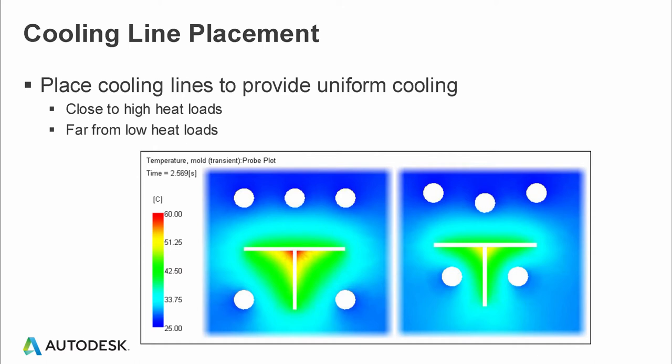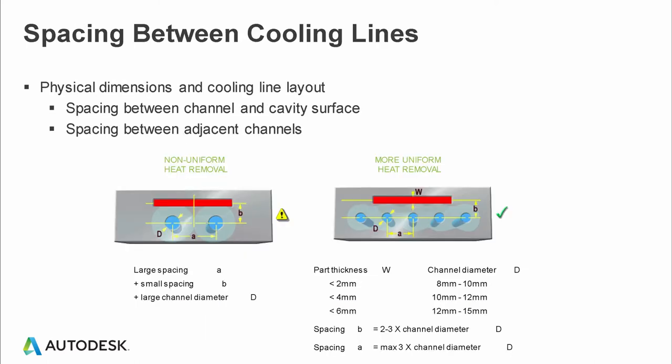If you keep cooling channels too far away from the heat source they won't be effective, so you need to keep them closer to extract heat efficiently. Some calculations can be used for the spacing between cooling channels. The spacing between the cooling channel and the cavity is roughly 10 times the part wall thickness, and the spacing between adjacent channels is about two to three times the channel diameter. These are thumb rules — you may need a few iterations to get the precise value — but these calculations are good for the initial stage rather than making assumptions.